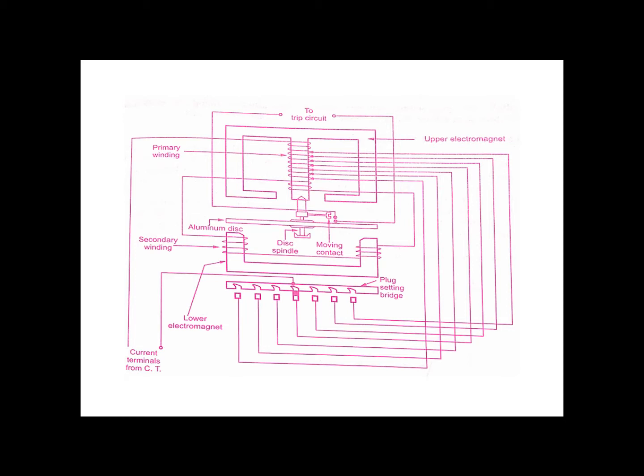When the current in the circuit exceeds a certain preset value, the over current relay operates. The induction type non-directional over current relay has a construction similar to a watt-hour meter, with slight modifications, but overall it remains a similar construction.